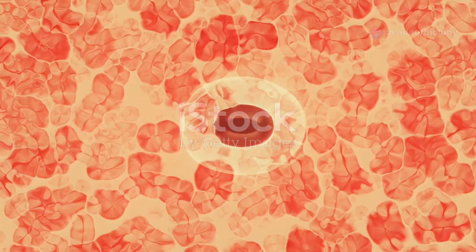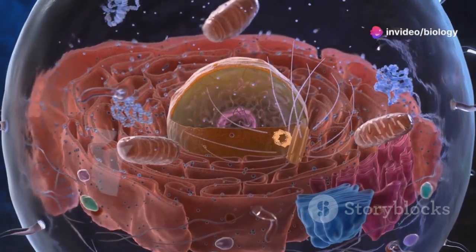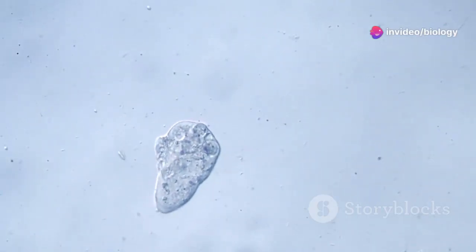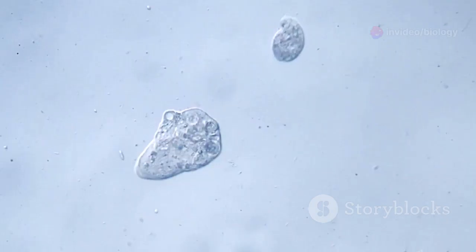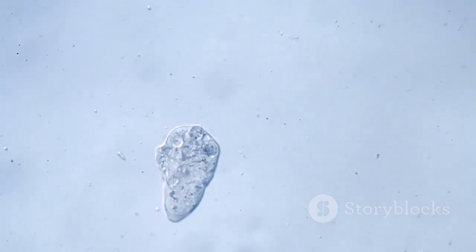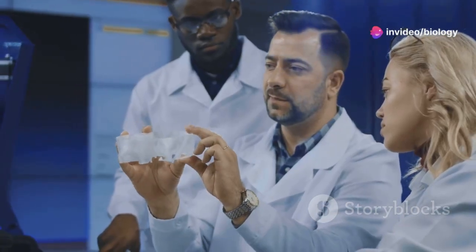But the story doesn't end there, folks. Enter Rudolf Virchow, another scientific superstar. He added the final piece to the cell theory puzzle. Virchow figured out that cells didn't just magically appear out of thin air - nope, he proposed that cells could only come from pre-existing cells. Talk about a revolutionary idea.